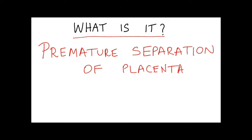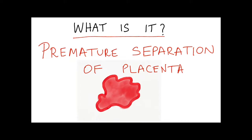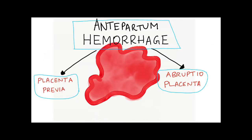Abruptio placenta is a condition where there is premature separation of placenta from the uterus resulting in antepartum hemorrhage. There are two important causes for antepartum hemorrhage. One is placenta previa, which was explained in the previous video, and in this video we will see about abruptio placenta.